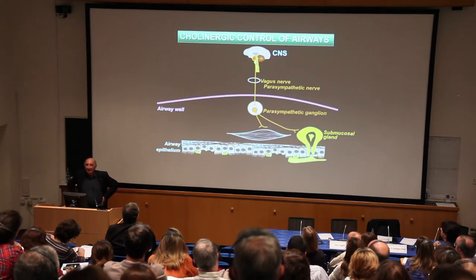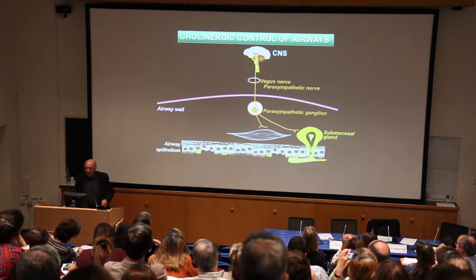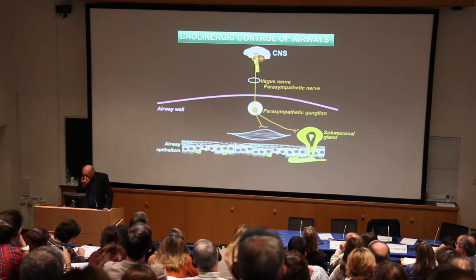How are these anticholinergics working in a disease that looks to be totally irreversible? The answer comes from understanding the cholinergic control of the airway. The vagus nerve comes down to the airway and relays in ganglia in the airway wall. From these ganglia, short post-ganglionic fibers innervate airway smooth muscle and submucosal glands through the release of acetylcholine acting on muscarinic receptors, leading to mucous secretion and bronchoconstriction. This pathway can be activated reflexly from sensory nerves, for example from irritants, or from the larynx or esophageal reflux.